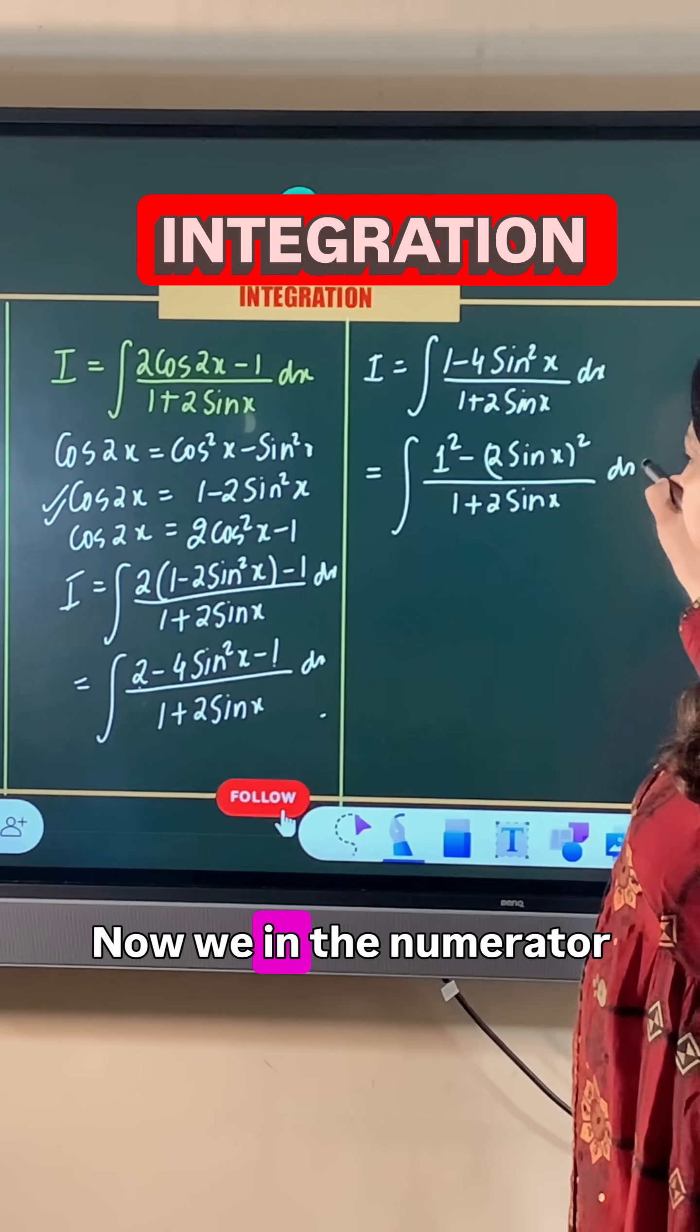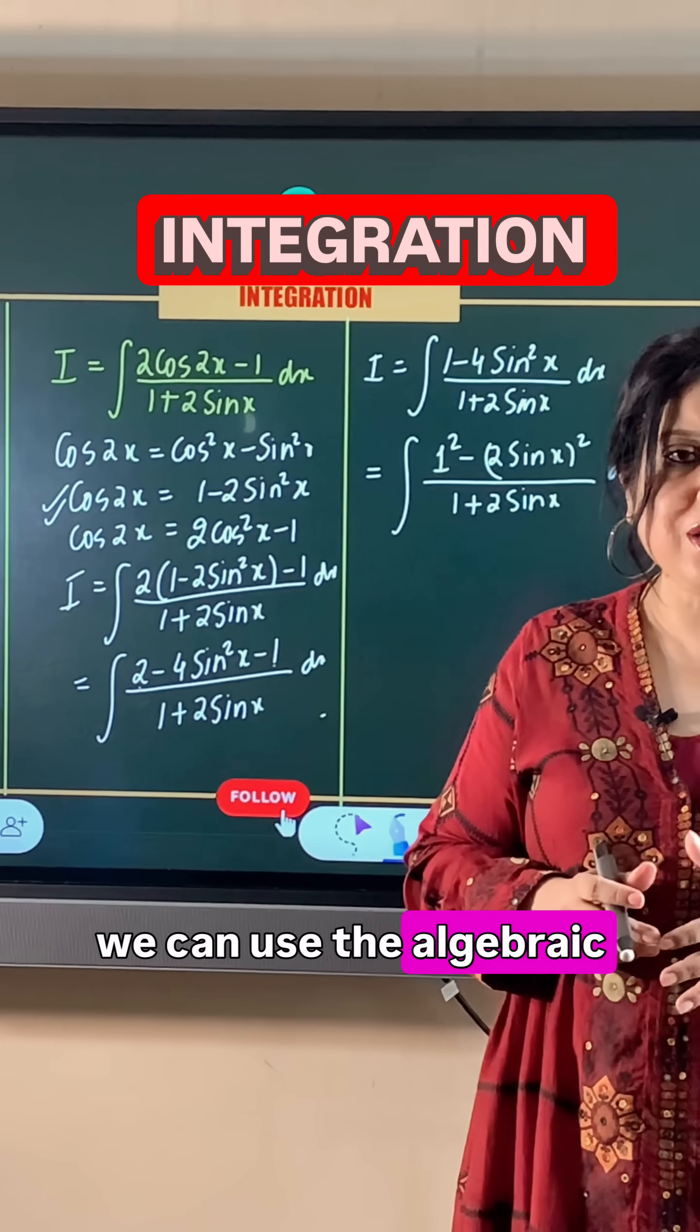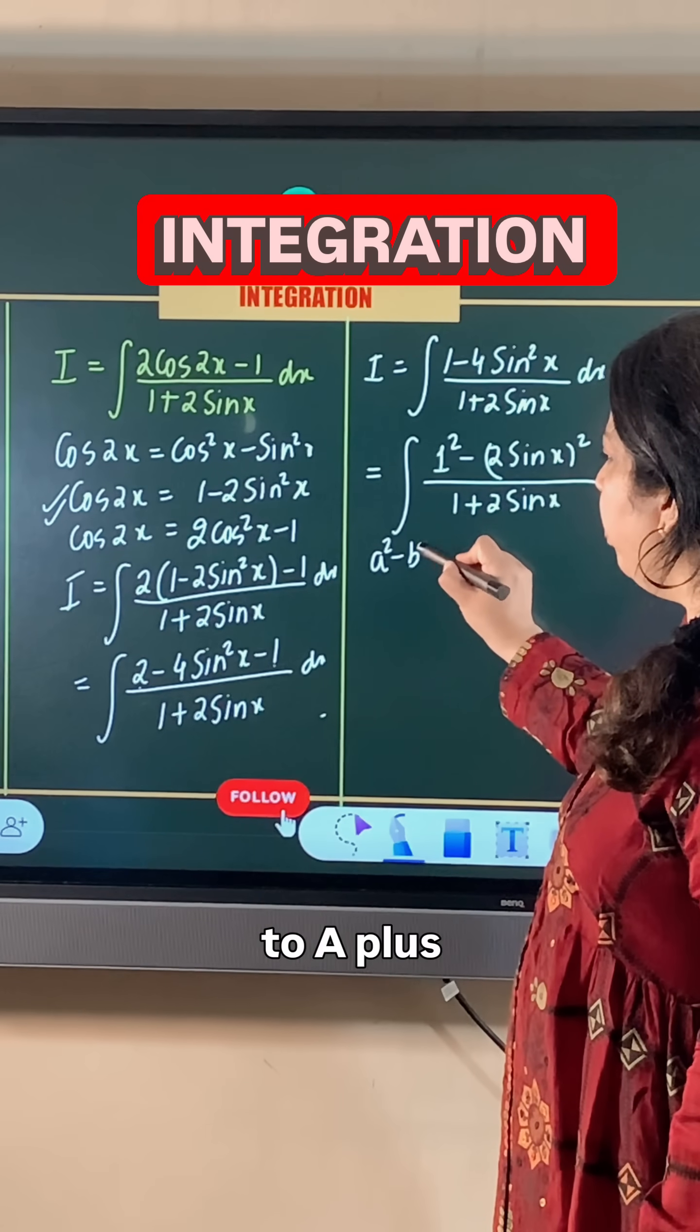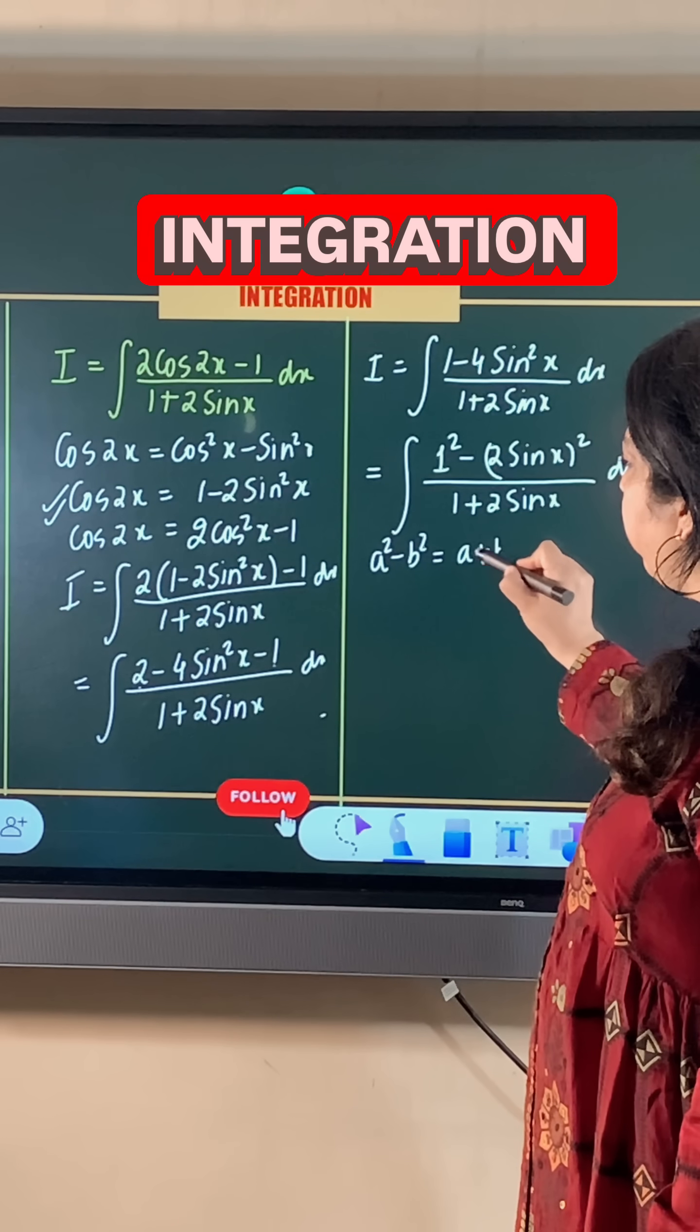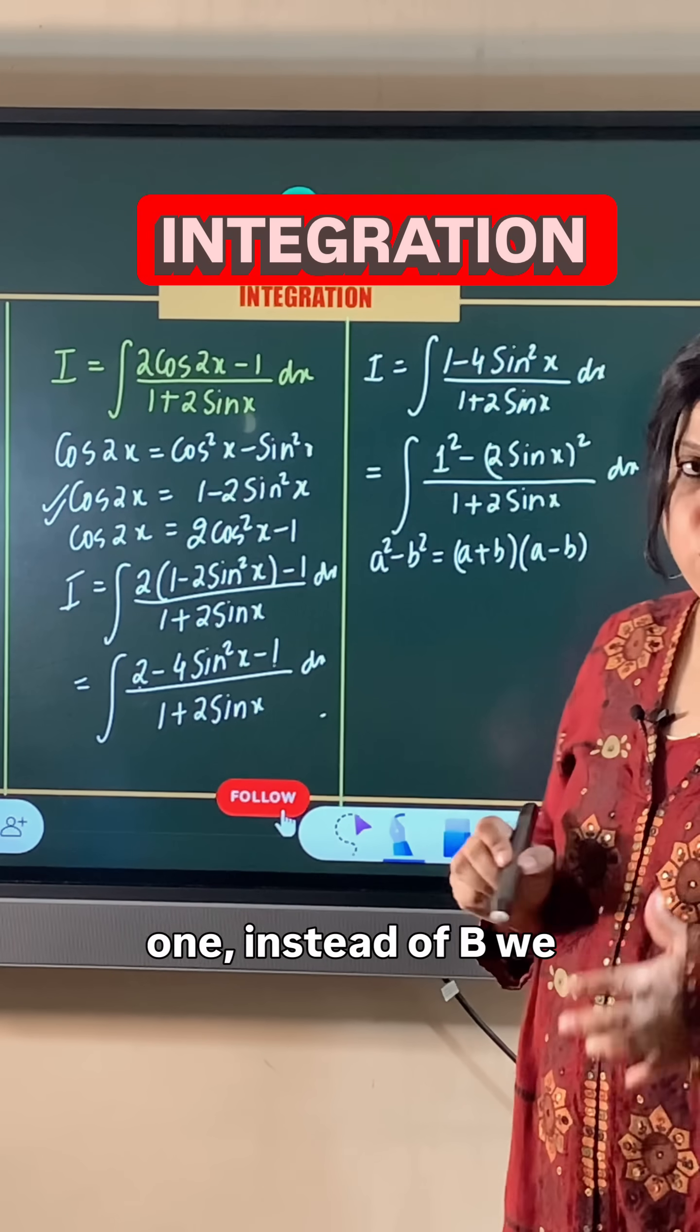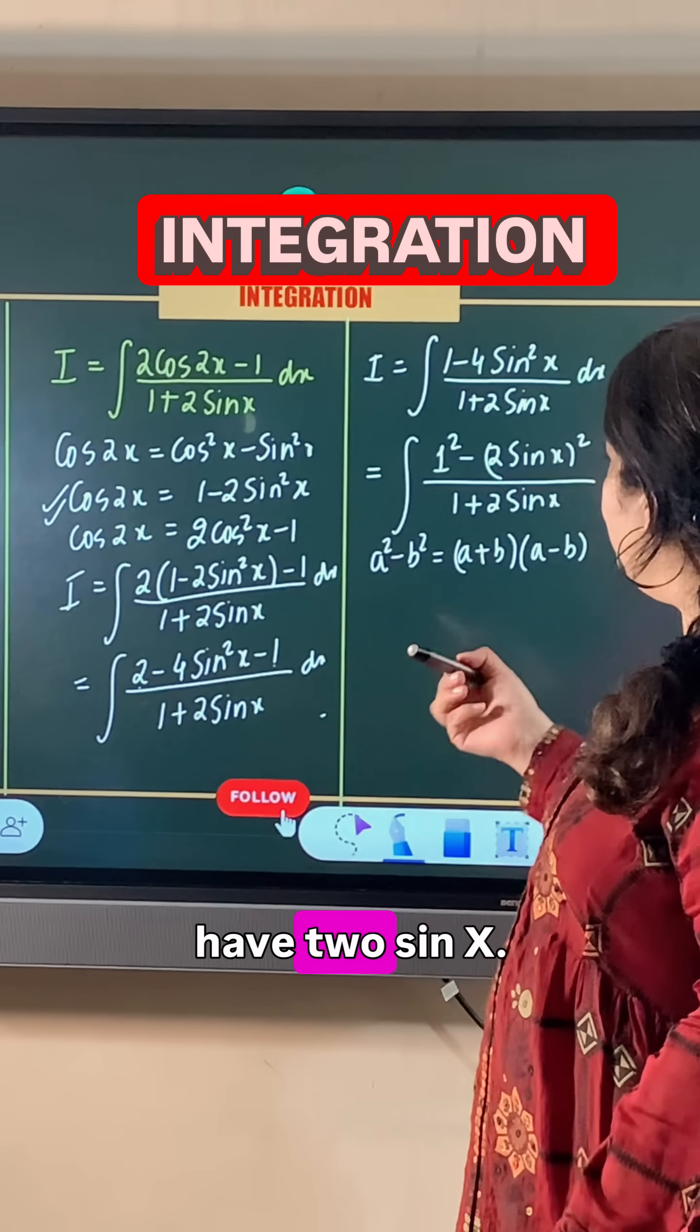In the numerator, we can use the algebraic identity a² - b² = (a + b)(a - b). Here, a = 1 and b = 2sinx.